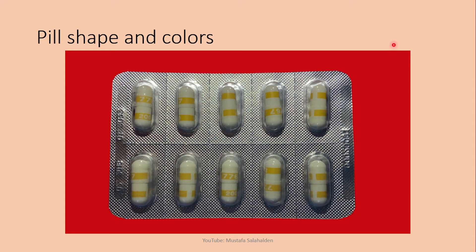Now for the pill shape and colors. The pill has a cylinder shape with two hemispherical ends and it is a white pill with bands. The bands have different colors according to the dose of the drug. Gold bands are with the 200 milligram pill, red bands are with the 50 milligram pill, and blue bands are with the 100 milligram pill.